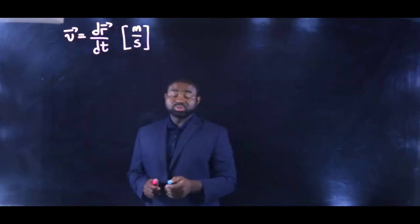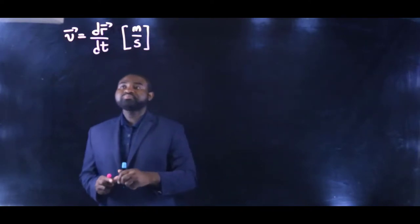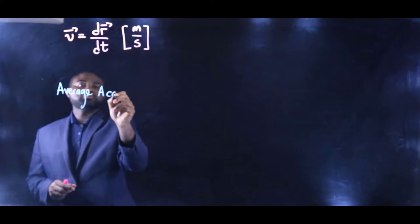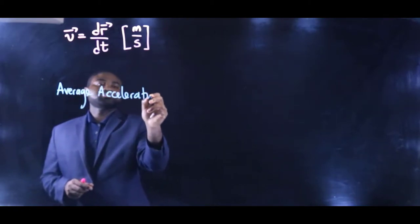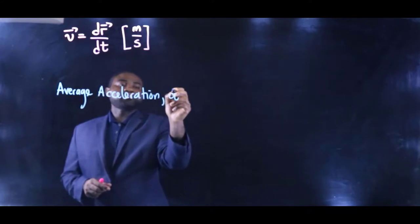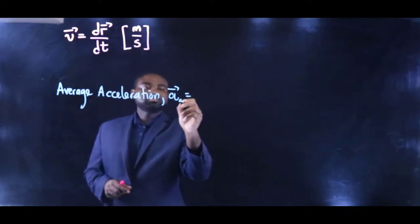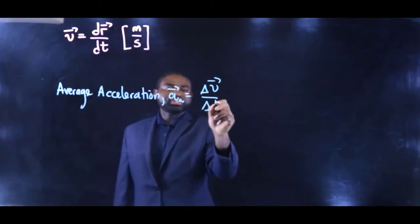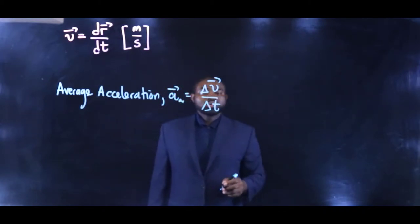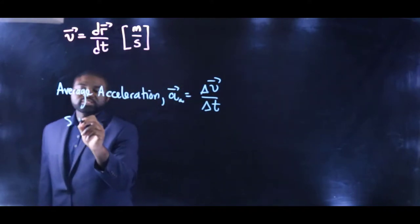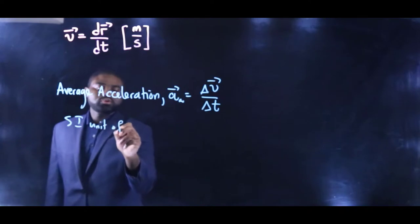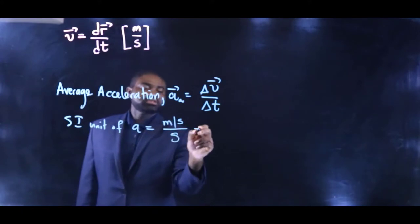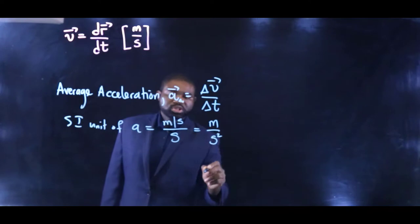So we will define a quantity called average acceleration. Average acceleration is defined as change in V divided by change in T. This means that the SI unit of A will be meters per second divided by seconds, which becomes meters per second squared.